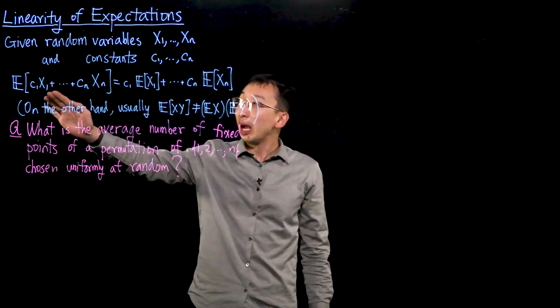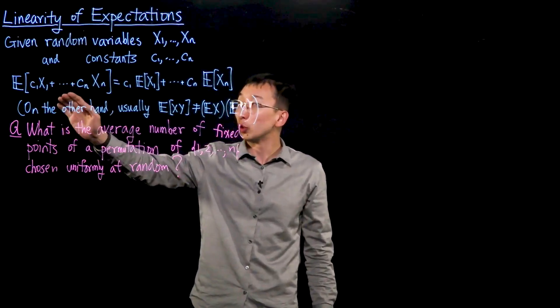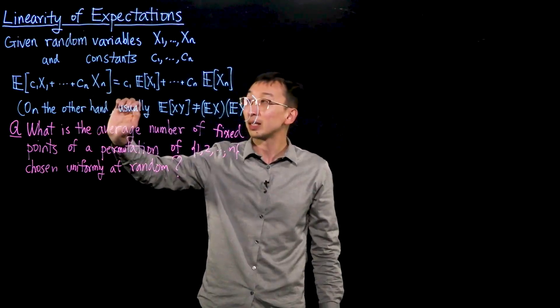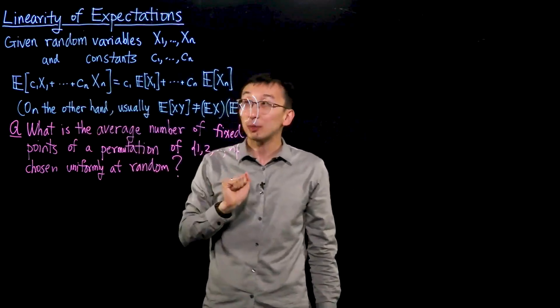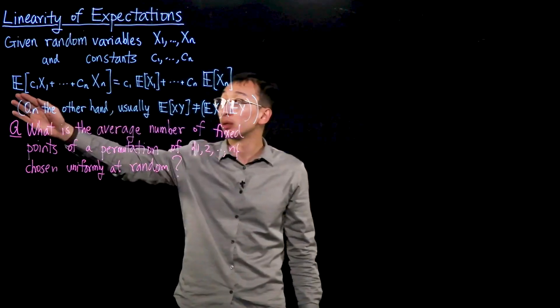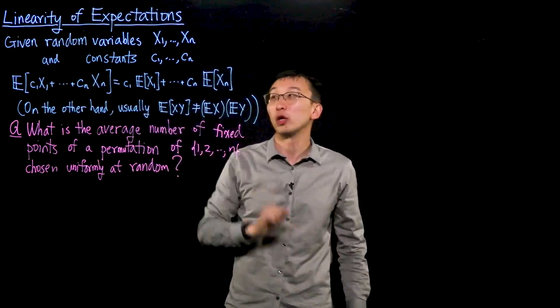Then the sum c1x1 + c2x2 + ... + cnxm has expectation the following, which can be computed by distributing this expectation symbol across to the individual variables.